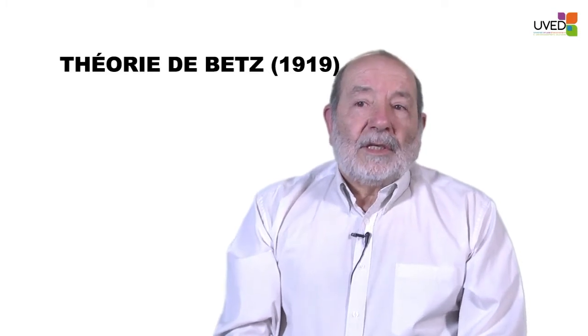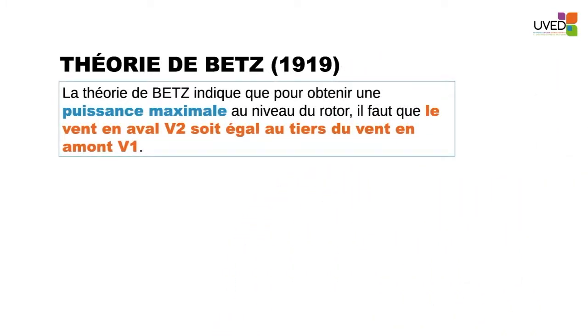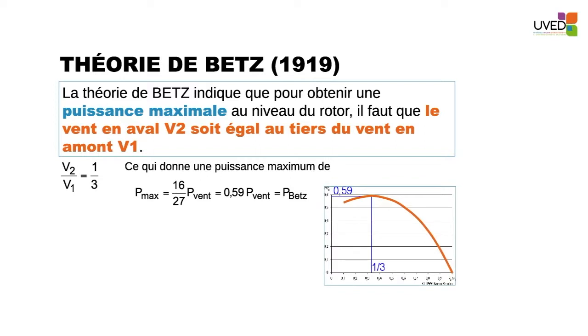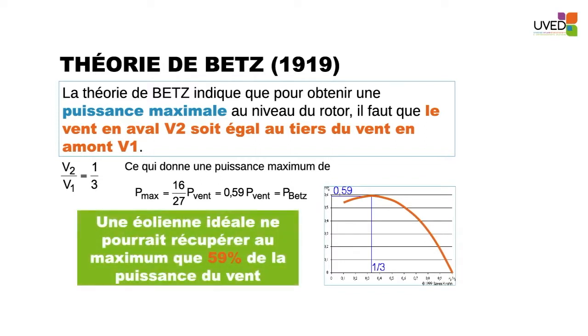Betz's theory indicates that in order to obtain the maximum power on the rotor, the wind behind the windmill should be one third of the wind before the windmill, which gives us a maximum power of approximately 16/27ths of the wind power — 0.59 times the wind power. An ideal windmill should be able to recover only 59% of the wind's power.